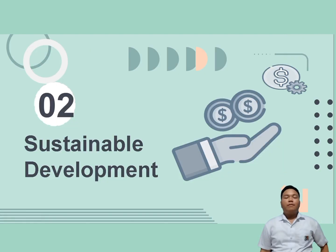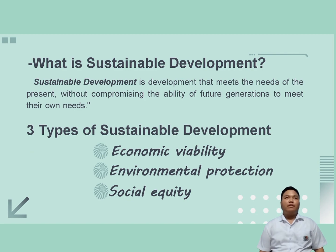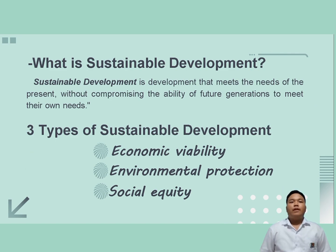Next is Sustainable Development. What is sustainable development? My understanding is that the needs of present people are being sustained, and the needs of future generations are already prepared — so that when future generations arrive, they will not struggle because their needs are already ready. We have three types of sustainable development: economic viability, environmental protection, and social equity.